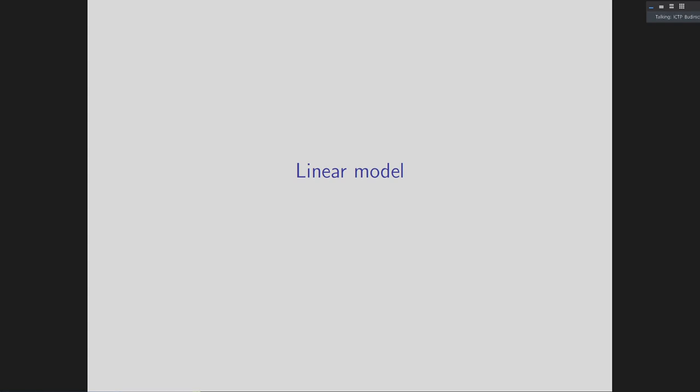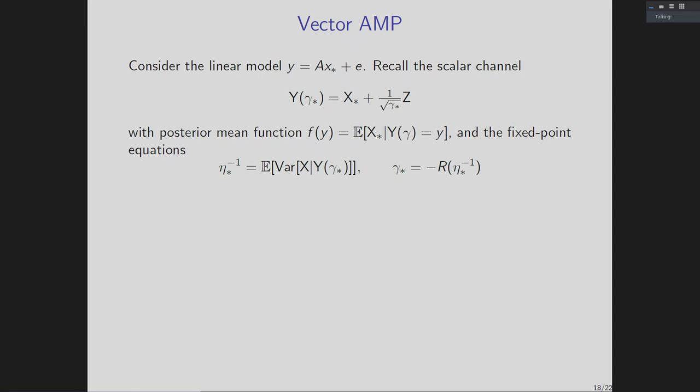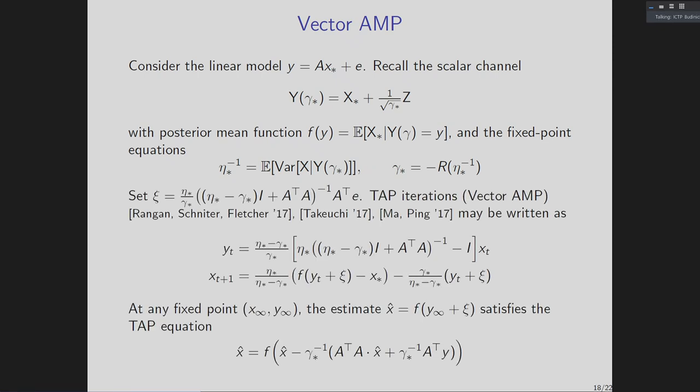With about five minutes left, let me cover some ideas for the linear model. To analyze the linear model Y = AX star + noise with the equivalent scalar channel, we also consider a TAP iteration for solving the conjectured TAP equations — these are vector AMP, due to Rangan, Schneider, and Fletcher; Keiko Takeuchi; and Ma and Ping. The form of the vector AMP iterates is analogous to the TAP iterations for the orthogonal invariant SK model, depending on a resolvent of A-transpose-A. By design, these iterates converge to a solution of the conjectured TAP equations.